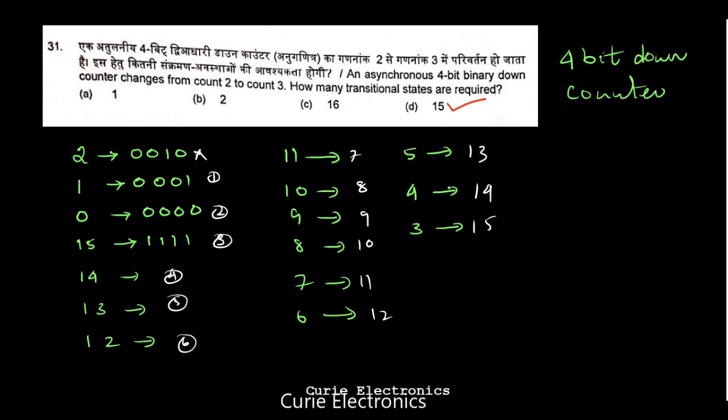There was one more question about which transistor configuration provides the highest voltage gain — common emitter or common base. Most books say it is common emitter, but I need to clarify this for myself first and will update you later.